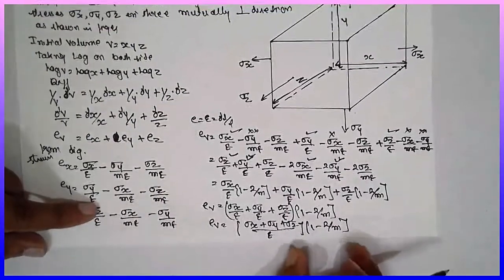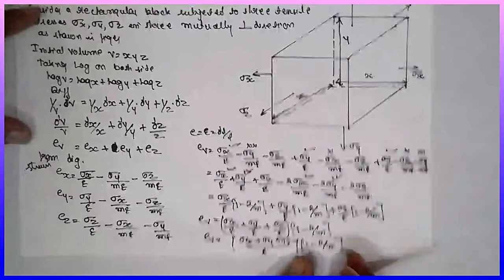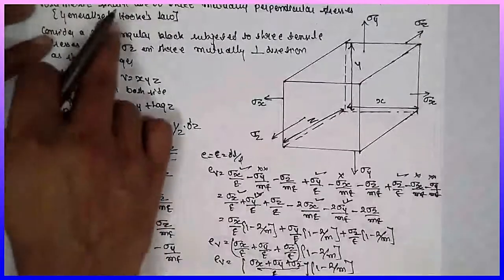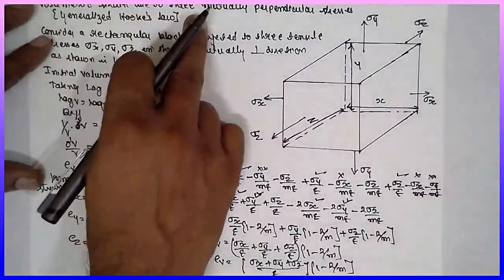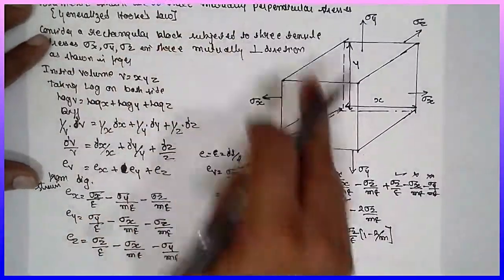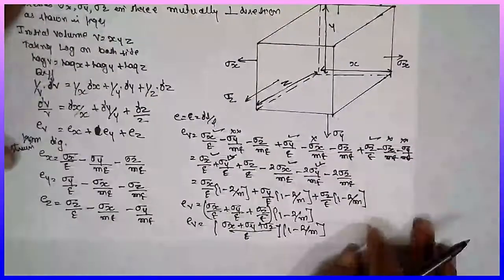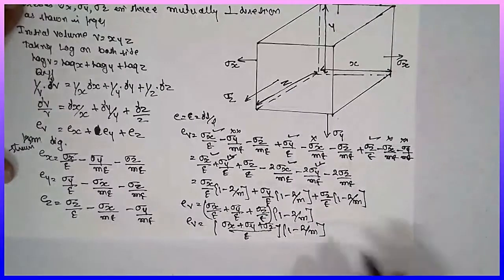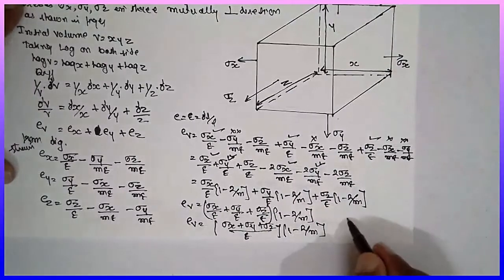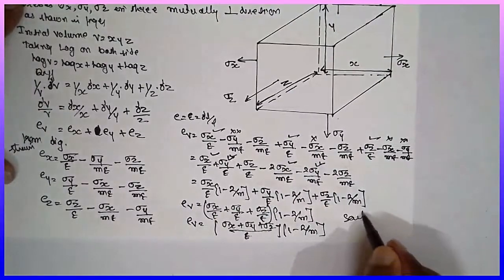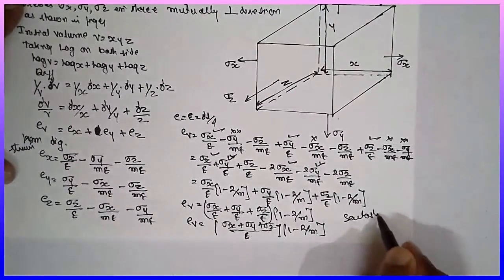This is the formula for volumetric strain due to three mutually perpendicular stresses. I am Santosh Gaidankar. Thank you very much.